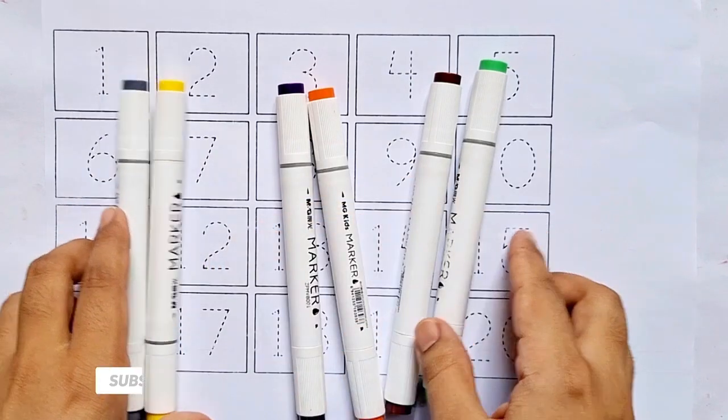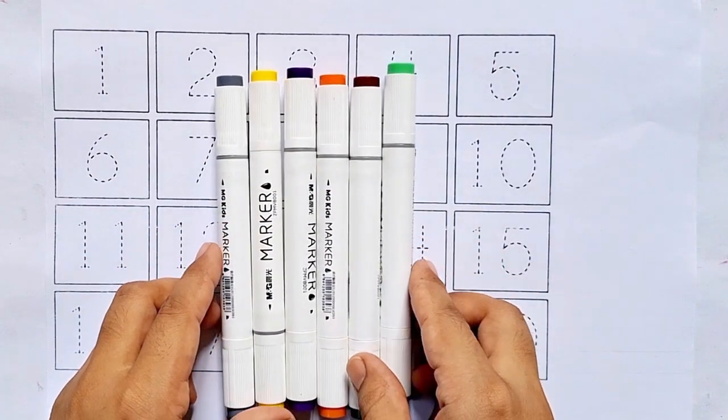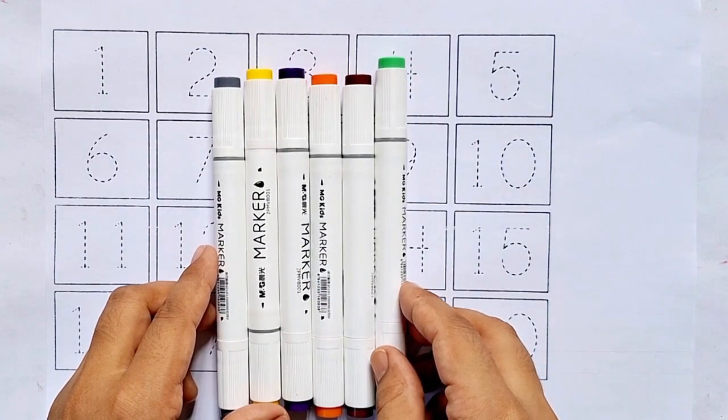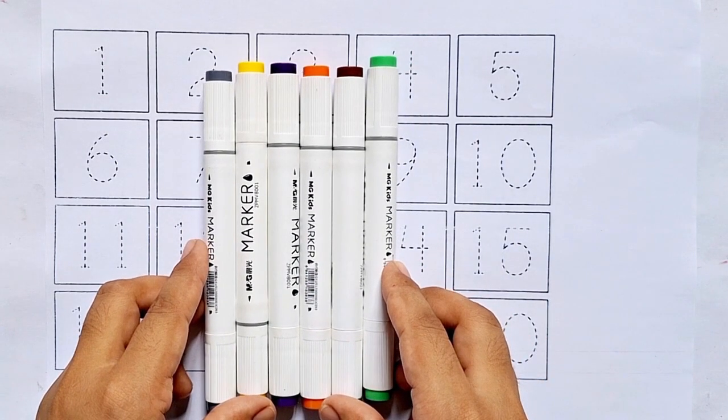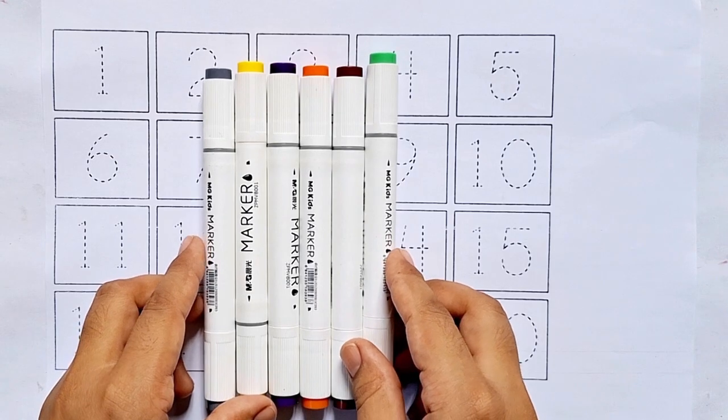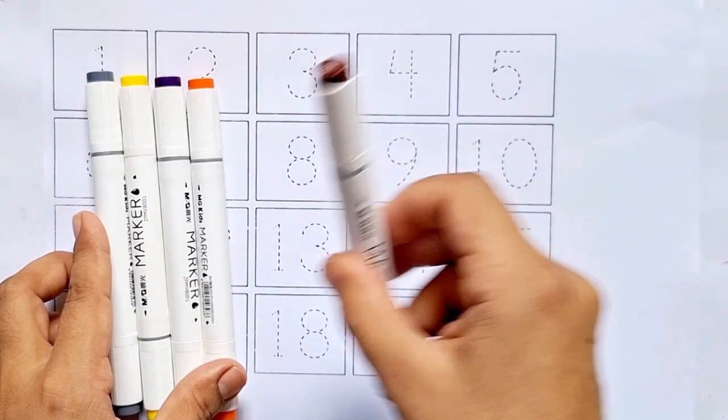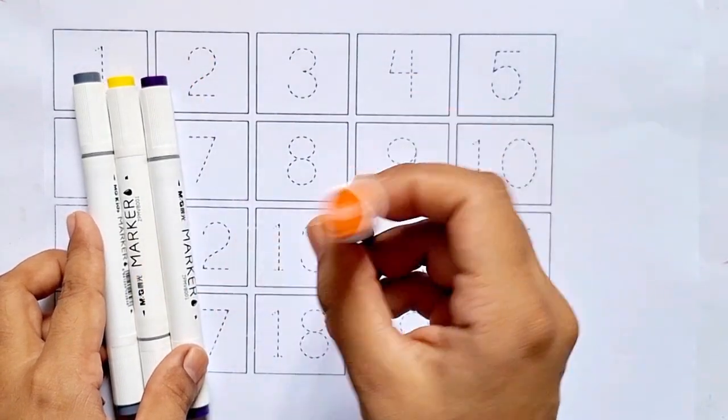Hello kids, how are you all? In today's video, I'm going to teach you counting from 1 to 20. Are you ready? Let's get started! But before we begin, let's learn some color names: light green, brown, orange, purple, yellow, gray.